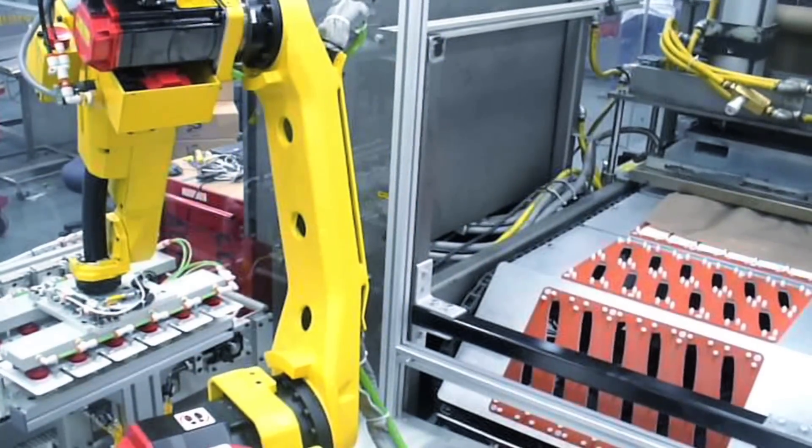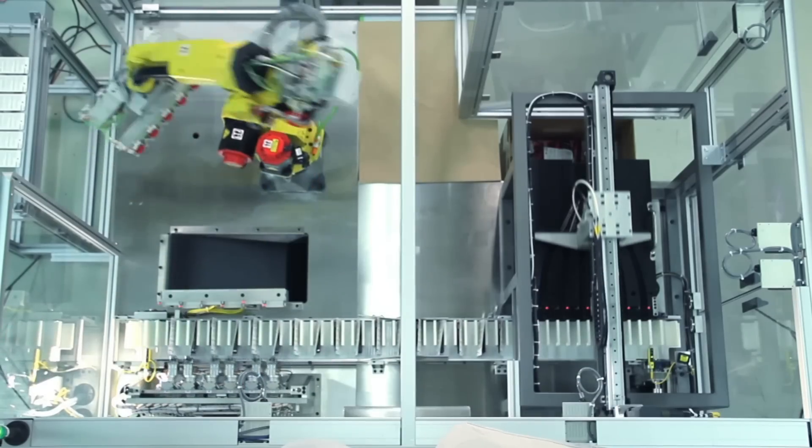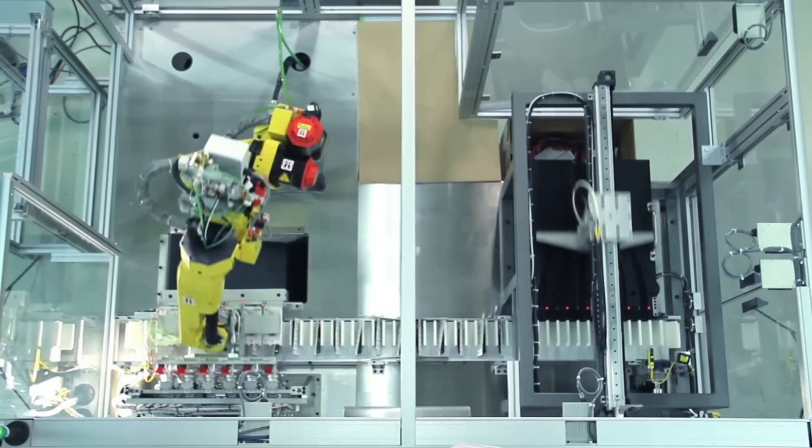The system starts with a six-axis FANUC M10IA robot unloading two rows of six blistered products from an alloy blister sealer.